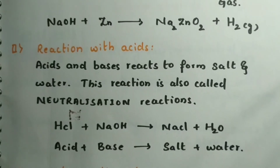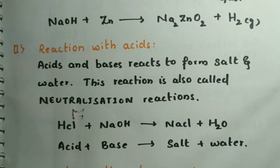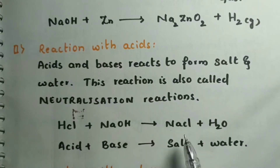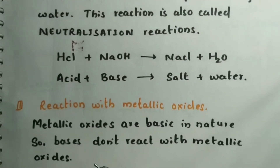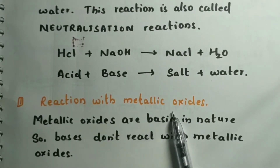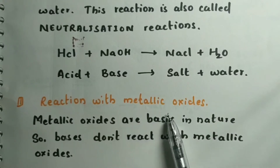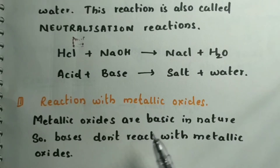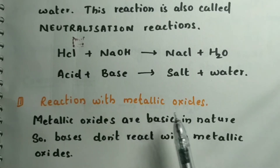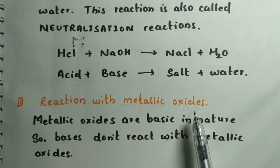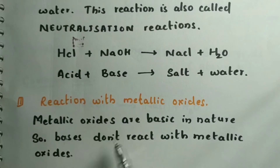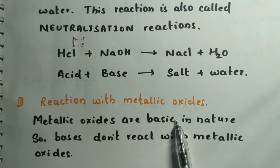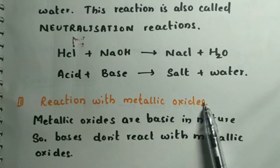The next reaction is bases with acids. Bases and acids react to form neutral substances — salt and water — which is why this is called a neutralization reaction. Bases cannot react with metallic oxides because metallic oxides are themselves basic in nature — as we concluded when studying the chemical properties of acids. Two bases cannot react with each other.